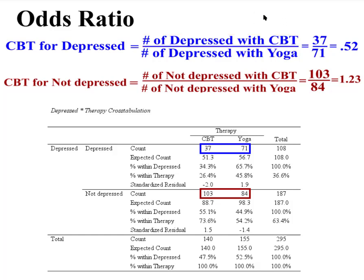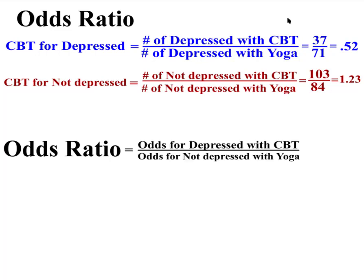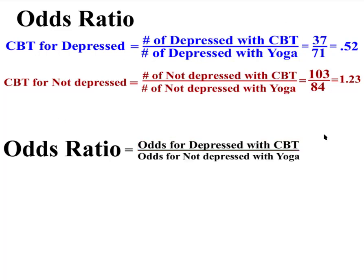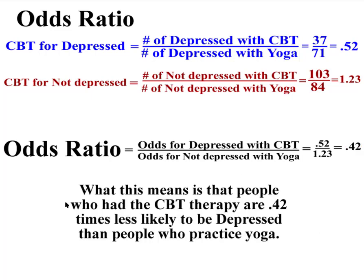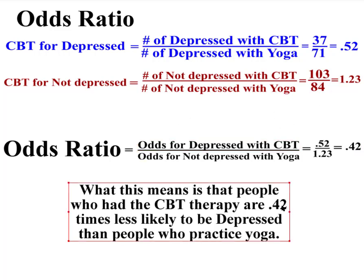Now we have the two different odds ratios and we need to make a ratio out of the ratios. The final odds ratio is the odds for depressed with CBT divided by the odds for not depressed with yoga. We divide 0.52 by 1.23 and get 0.42. That is the odds ratio. What this means is that people who have CBT therapy are 0.42 — or about 42% — less likely to be depressed than those who practice yoga.